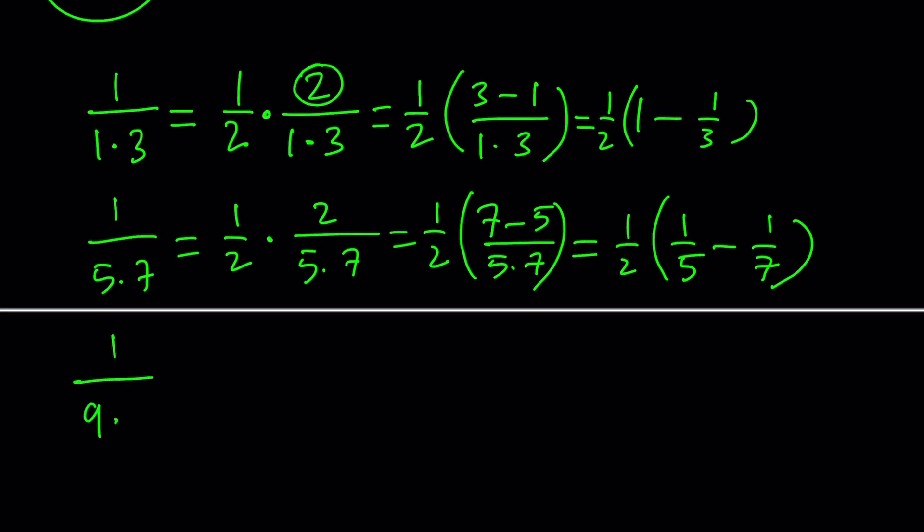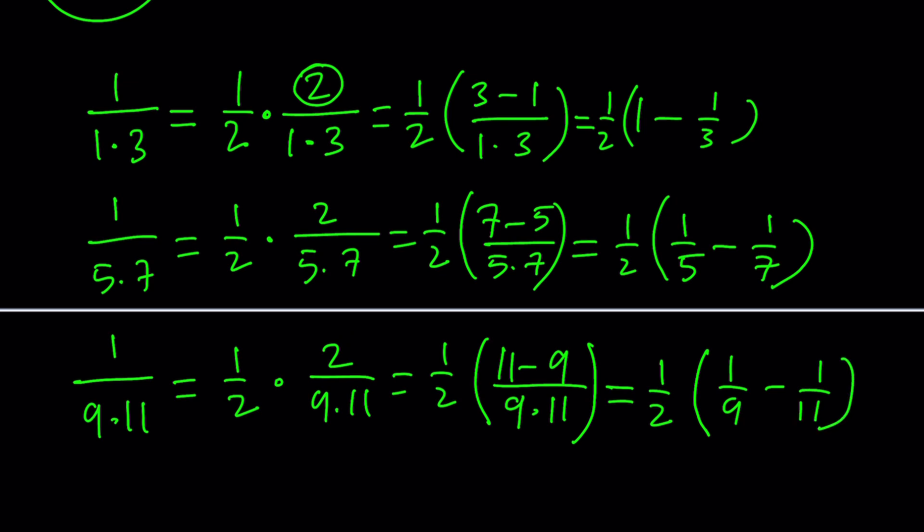We're going to do the same thing one more time to get the pattern really good: 1 half times 2 over 9 times 11, and then 1 half times 11 minus 9. Repetition is key here so you really solidify the concept. I know some people are going to be like, 'this is too easy, why are you spending too much time on it?' Well, not everybody is as genius as you are, so calm down. Now we can write this as 1 over 9 minus 1 over 11.